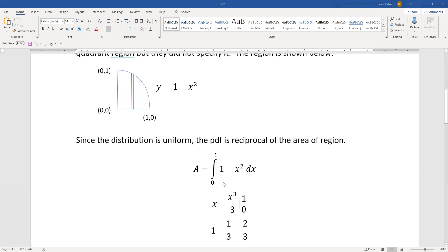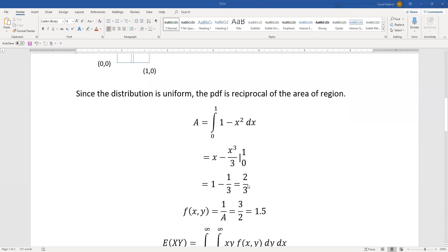So integral of one minus x squared dx from zero to one is x minus x cubed by three from zero to one. Substitute the limits, you get two thirds. So the pdf, the joint pdf is the reciprocal of the area, which is three over two, which is 1.5.